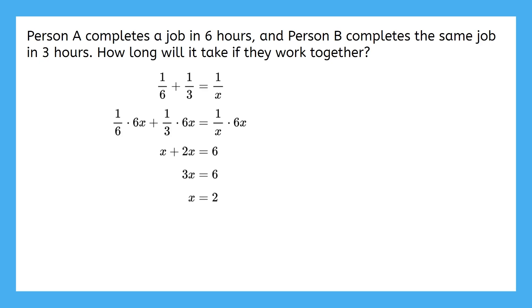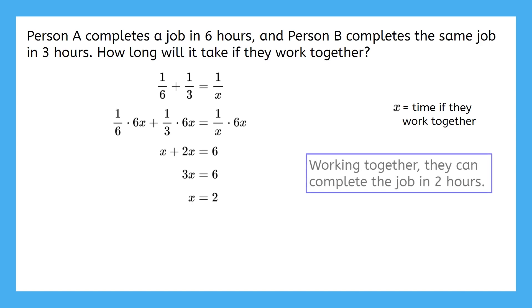Okay, so we got an answer of 2, and we know it's not extraneous because it wouldn't make any denominators equal zero. But what does x equaling 2 mean? Interpreting our answer is probably the most important part of this problem. So what does 2 mean?